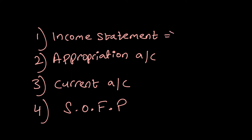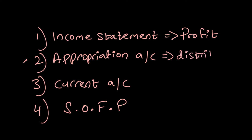When accounting for a partnership, as usual we draw our income statement, which helps calculate the profit for the year. Whereas when we were a sole trader this entire profit went to one individual, in a partnership the profit has to be distributed. To distribute this profit, we draw something called an appropriation account.